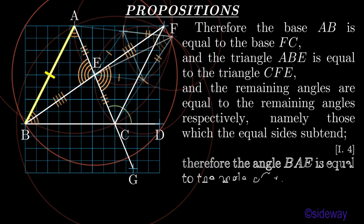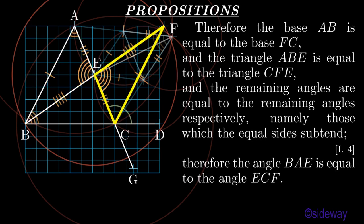Therefore the base AB is equal to the base FEC. And the triangle ABE is equal to the triangle CFE. And the remaining angles are equal to the remaining angles respectively, namely those which the equal sides subtend, by Book 1 Proposition 4.